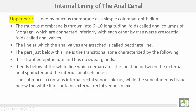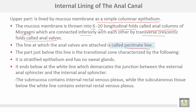The upper part of the anal canal is lined by mucous membrane, a simple columnar epithelium. The mucous membrane is thrown into from 6 to 10 longitudinal folds called the anal columns of Morgagni, which are connected inferiorly with each other by transverse crescentic folds called the anal valves. The line at which the anal valves are attached is called the pectinate line.